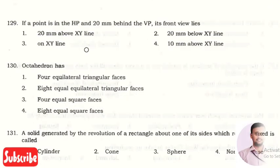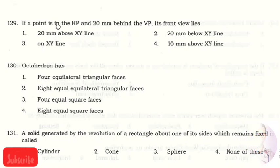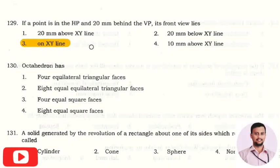The next question is: if a point is in the HP and 20 mm behind the VP, its front view lies in? The right option is option three, that is its front view lies on XY line.